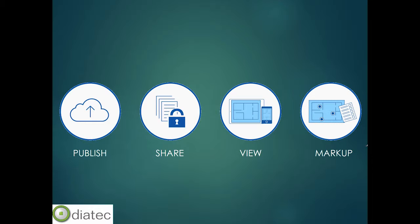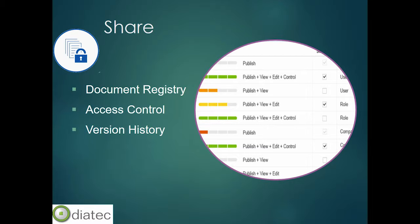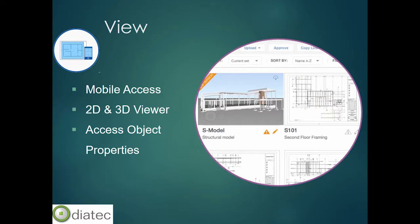Breaking these down: publishing centralizes all electronic information across a project into a single repository, making it easily available. Title blocks can be scanned to allow attribute extraction for coordination in the project folder structure. Sheet separation allows information within a drawing to be extracted into sheets, whether DWF or PDF. Equally important is access control — a document registry lists all project documents with dates and modification times, and you can specify who has publishing, viewing, editing, or control access to a particular folder or file. Version history is also available, allowing you to version files up and down.